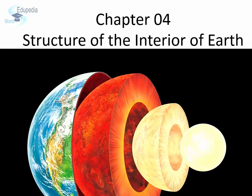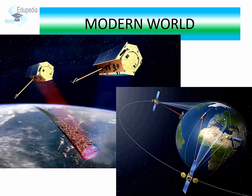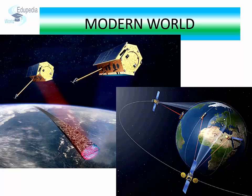In this chapter, we are going to explore in detail about the interior structure of Earth and the methods used to explore the interior. Humans have always been trying to explore the world beyond the sky and beneath the ground. Exploring space above us is easier compared to exploring Earth's interior, because in the interior we have to withstand unbearable pressure and temperature.